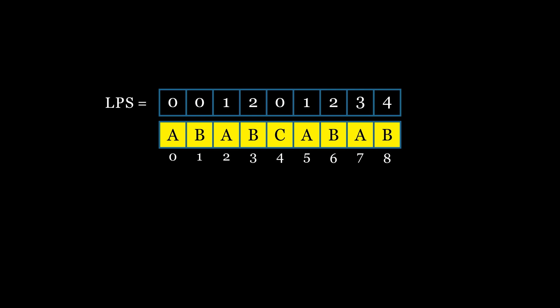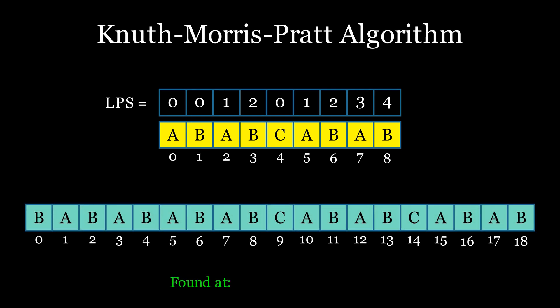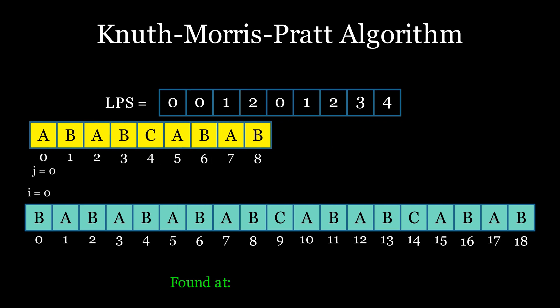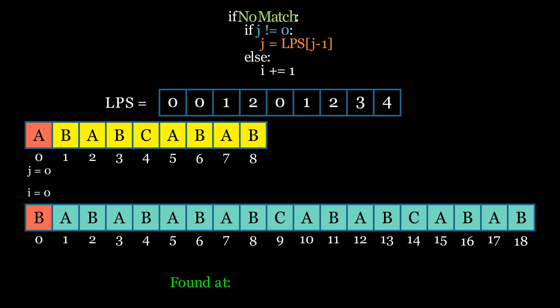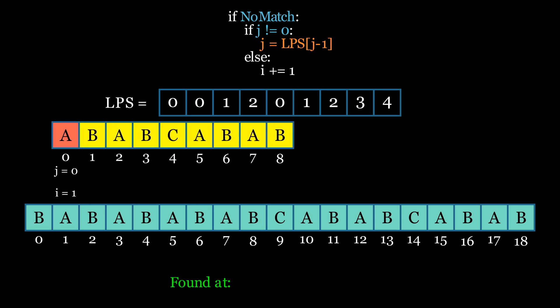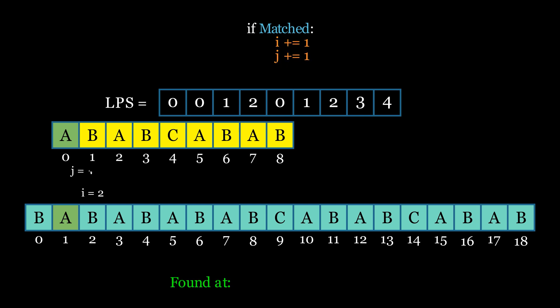Once we obtain the LPS array, we can move on to the searching phase. First, we initialize two pointers, i and j, both initially set to 0. We then start matching the pattern element at index j with the text element at index i. If they don't match and j is not 0, we update j to the element at index j minus 1 in the LPS array. If j is 0, we simply increment i by 1. If the elements match, we increment both i and j by 1 and continue.